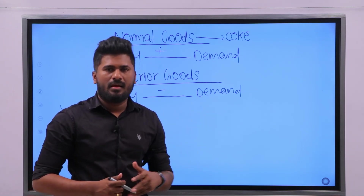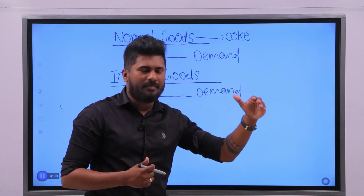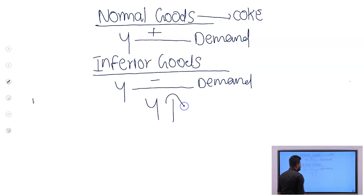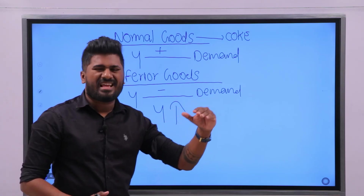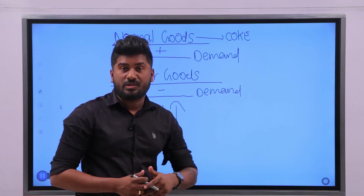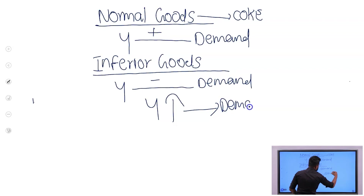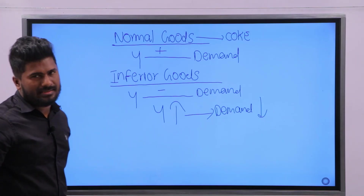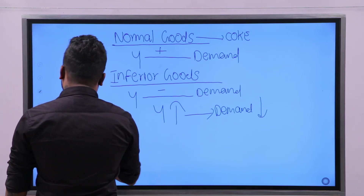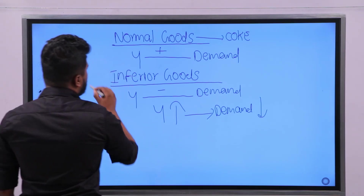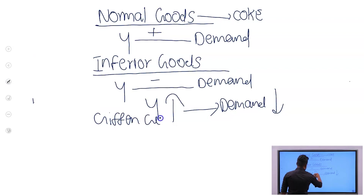Another example: at your university time you are riding a food cycle. Once you pass out from university and get a good job, you will be highly paid — your income has increased. At that point, you think that according to your income level, a food cycle is no longer suitable for you. So you are decreasing the demand for food cycles. This is what we identify as an inferior good.